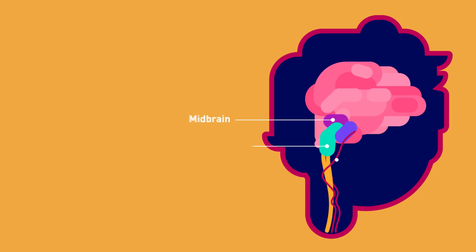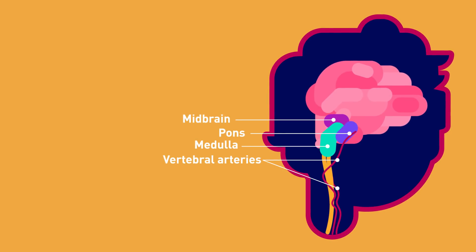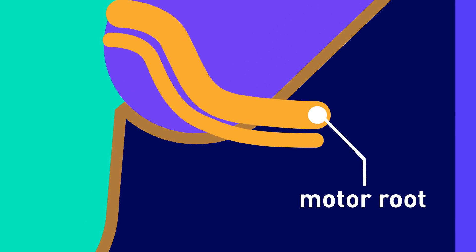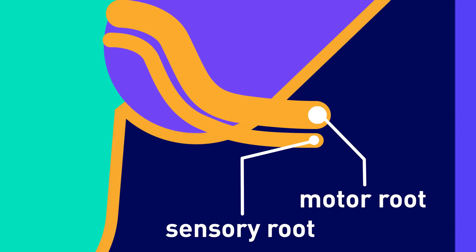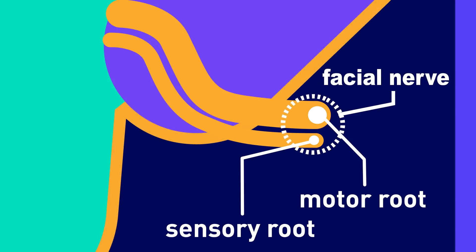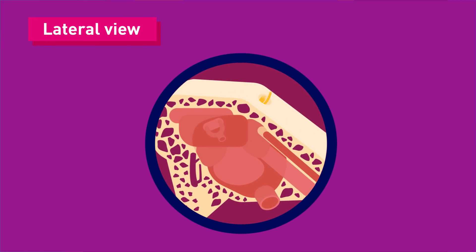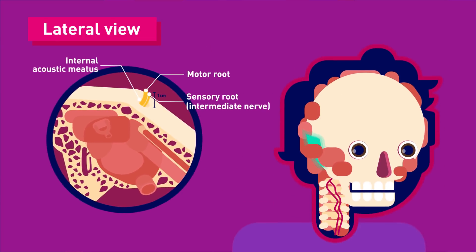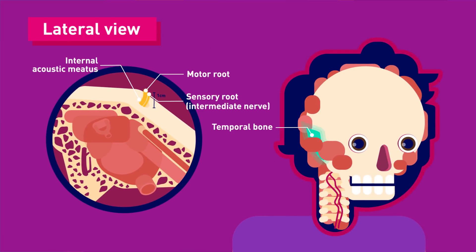Intracranial, the nerve arises in the pons, an area of the brain stem. It begins as two roots: a large motor root and a small sensory root. The part of the facial nerve that arises from the sensory root is sometimes known as the intermediate nerve. The two roots travel through the internal acoustic meatus, a 1 cm long opening in the petrous part of the temporal bone.